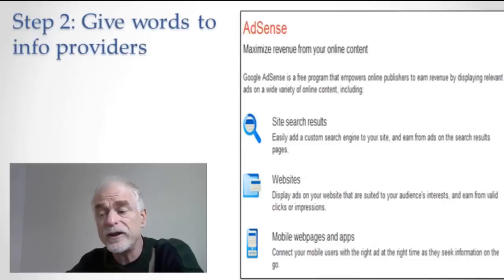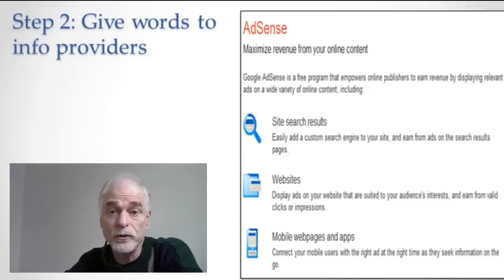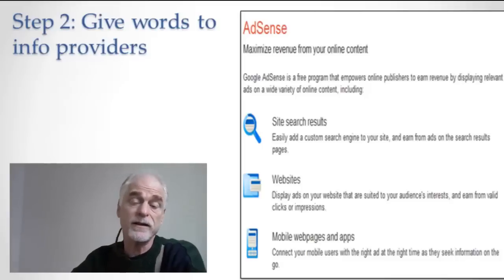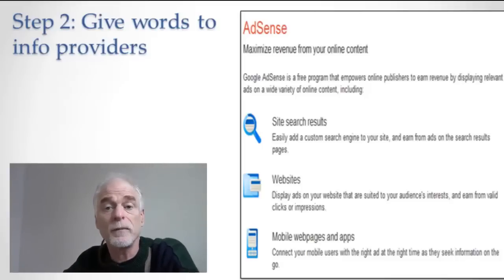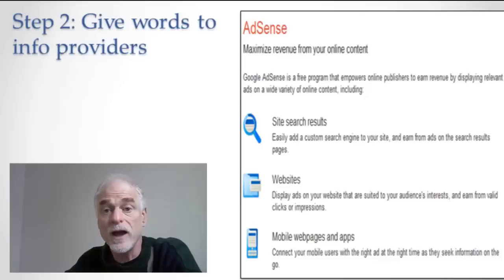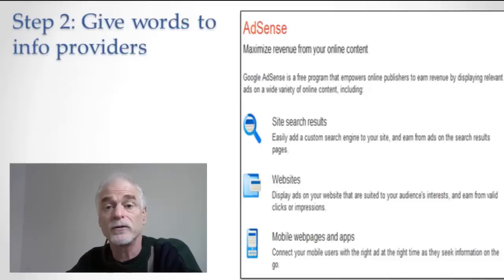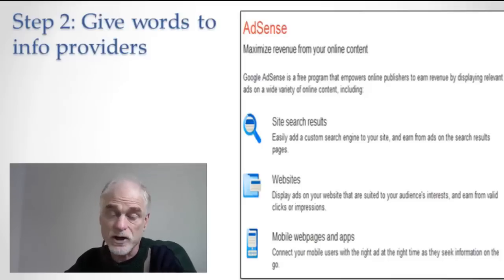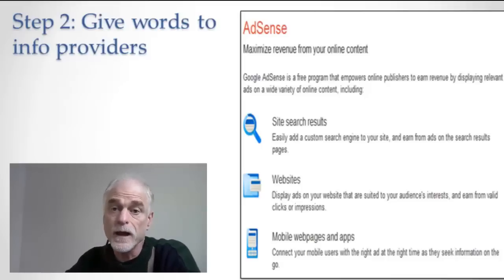That's step number two. In step number two, Google basically gives away words to people who have content. So if I'm a website that specializes in flowers and I talk all about the different kinds of flowers — I don't sell flowers, I'm just a flower information site — I know that I'm a magnet for people who are interested in flowers. And when they're on flowers, maybe they want to buy flowers. So I'm going to have the word 'flowers' or 'buy flowers' or 'purchase flowers' or 'flower shop' — whatever word it is that I want Google to associate with me.